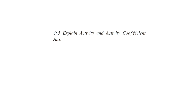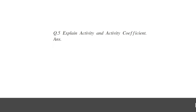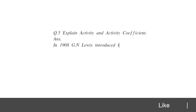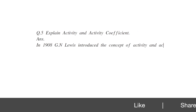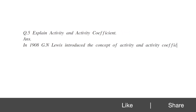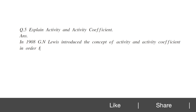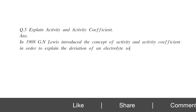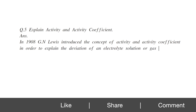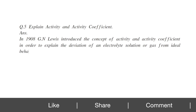Explain Activity and Activity Coefficient. In 1908, G.N. Lewis introduced the concept of Activity and Activity Coefficient in order to explain the deviation of an electrolyte solution or gas from ideal behavior.